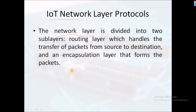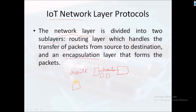The first sub-layer is the routing layer, which handles the transfer of packets. The routing layer provides the route and handles data transfer from source to destination, transmitting data in the form of packets. The second is the encapsulation layer, which forms the packets.